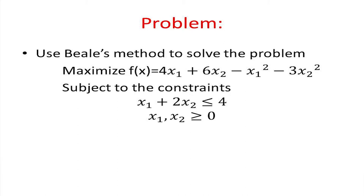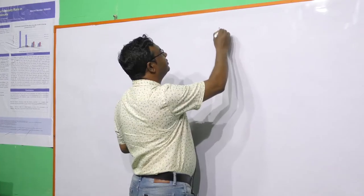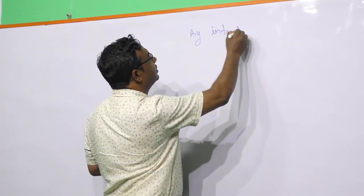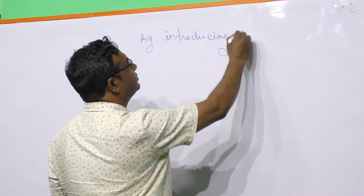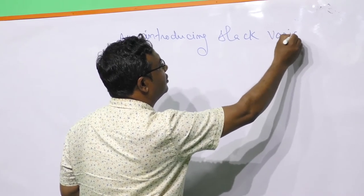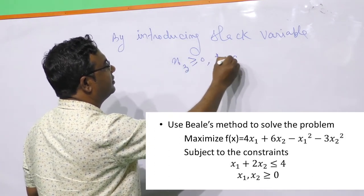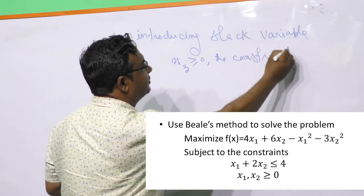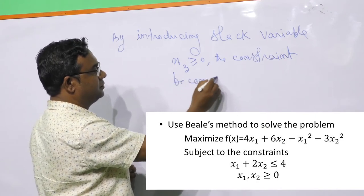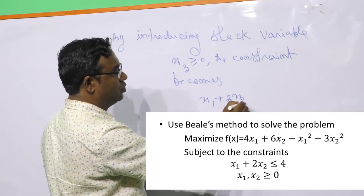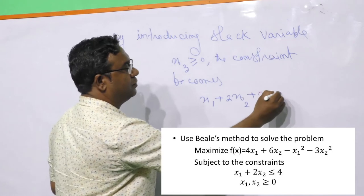In this problem, the objective function is to maximize f(x). This is a quadratic function subject to constraints. The constraint is of the less-than-or-equal-to type. We need to introduce one slack variable. By introducing slack variable x3, the constraint becomes: x1 + 2x2 + x3 = 4.